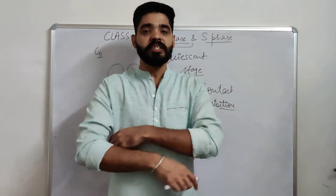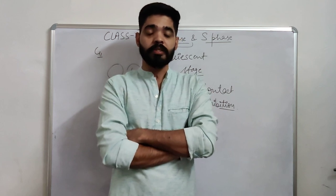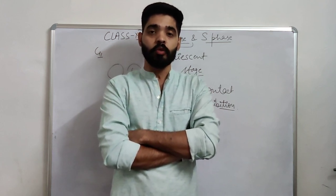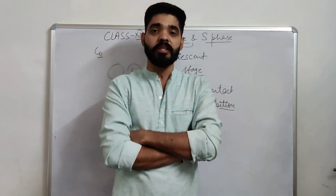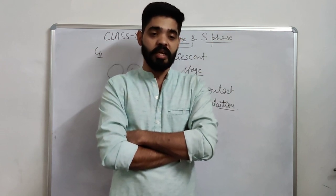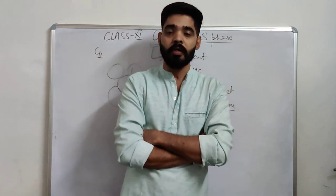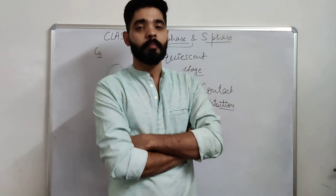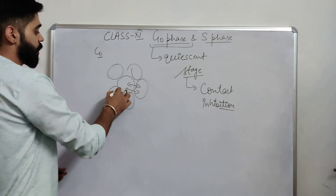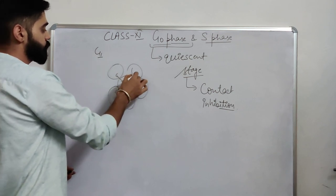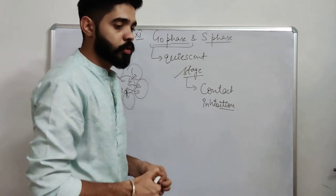The checkpoint present in the G1 phase can maintain the cell in an inactive stage — only metabolically active. If a cell enters into the S phase, the cell is committed to completing DNA duplication, that is the doubling of chromatin material. This contact inhibition is maintained by certain chromosomes and genes.